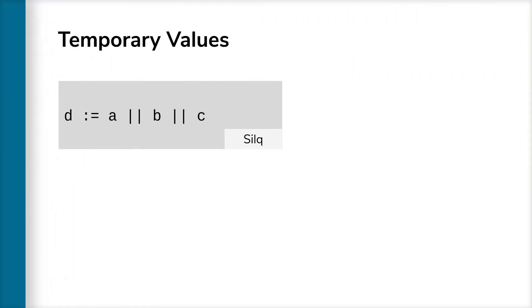So what is the key difference between Zilk and other languages? To answer this question, let's look at this simple example, which computes the OR of three quantum bits A, B and C and stores the result into D. This is a simple computation that looks trivial in Zilk. So let's see how you would express it in existing languages.